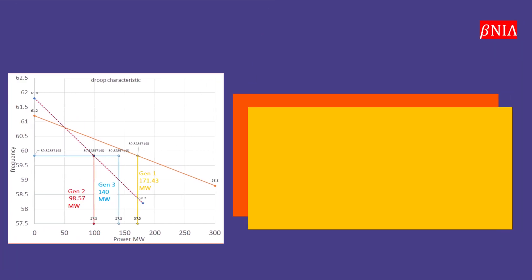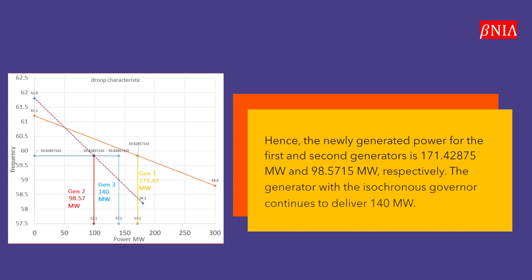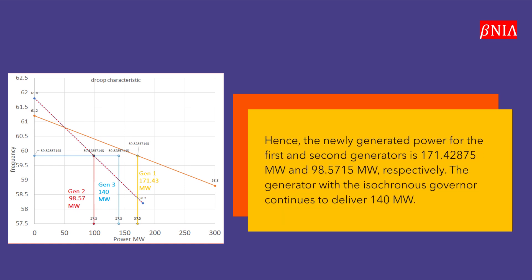Hence, the newly generated power for the first and second generators is 171.42875 MW and 98.5715 MW, respectively. The generator with the isochronous governor continues to deliver 140 MW.